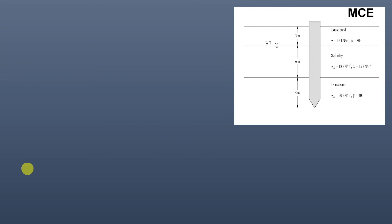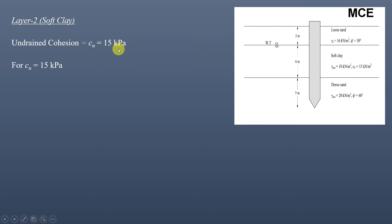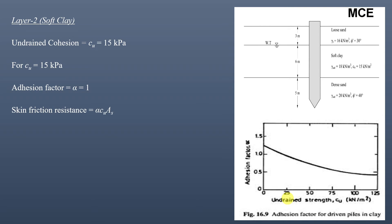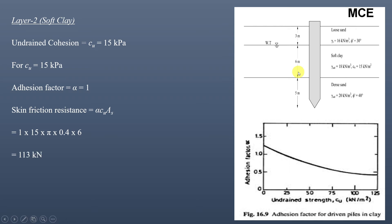The next layer is soft clay. The undrained cohesion Cu is 15 kPa. For Cu = 15 kPa, we find the adhesion factor alpha from the chart of adhesion factor versus undrained strength; the value of alpha is 1. The skin friction resistance in the clay layer is alpha × Cu × surface area = 1 × 15 × π × 0.4 × 6, where 6 meters is the length of the pile in this clay layer, giving 113 kN.